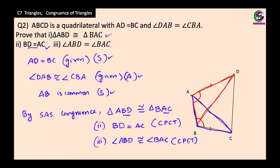Have you ever been confused about the meaning of CPCT? Once you prove that two triangles are congruent, all three angles of the first triangle equal the three corresponding angles of the second triangle, and all three sides of the first triangle equal the three corresponding sides of the second triangle. This was explained in periods 29 and 30.